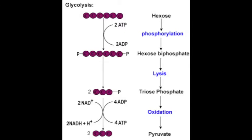The inputs of glycolysis are two NAD+, two ATP, and the six-carbon sugar. Glycolysis starts by using two ATP to phosphorylate glucose, as shown in this picture. The enzyme will then split the six-carbon sugar into two three-carbon sugar molecules. Then a redox reaction happens when the three-carbon sugar gets oxidized or dephosphorylated.